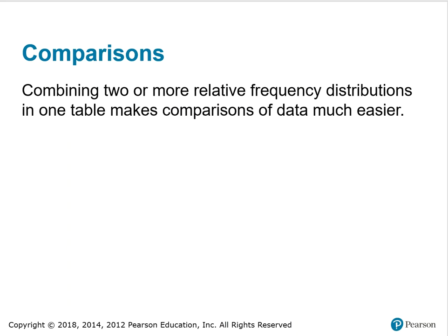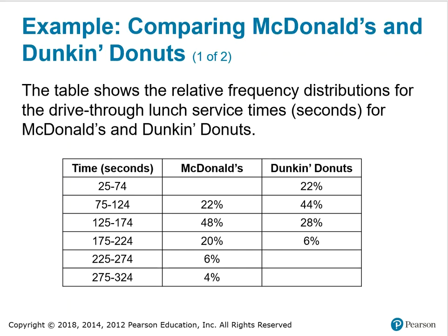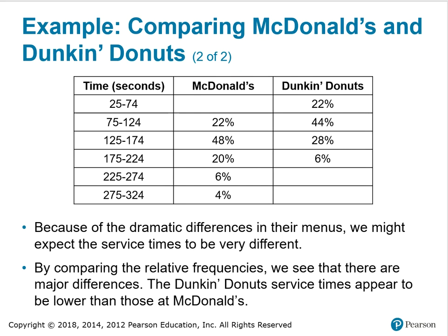Combining two or more relative frequency distributions into one table makes comparisons of data much easier, just like we found with the cigarette example. Here we're comparing McDonald's and Dunkin' Donuts. The table shows the relative frequency distribution for drive-thru lunch service times in seconds for both. Because of the dramatic differences in their menus, we might expect the service times to be very different. By comparing the relative frequencies, we see that there are major differences — the Dunkin' Donuts service times appear to be lower than those at McDonald's.